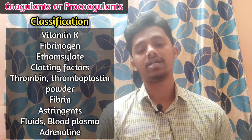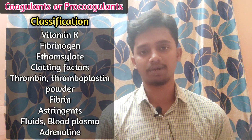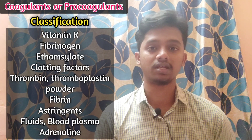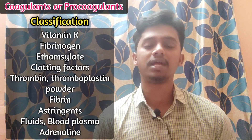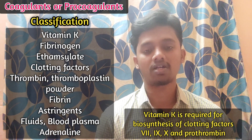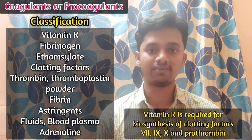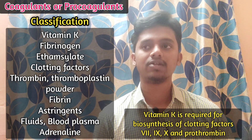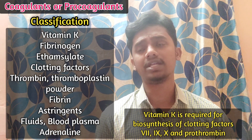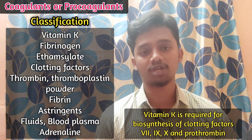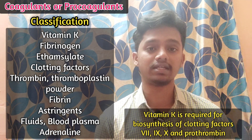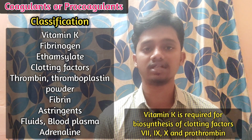Now let's discuss the pharmacology of Vitamin K and how it promotes coagulation. There are three types: Vitamin K1, K2, and K3. All three are involved in the biosynthesis of clotting factors in the liver. Vitamin K helps in the synthesis of prothrombin and clotting factors 7, 9, and 10.